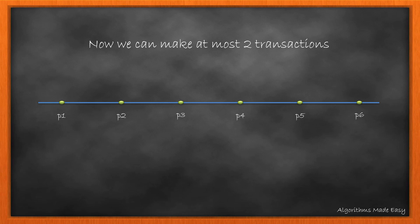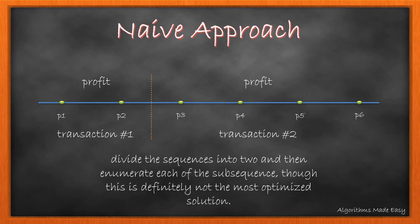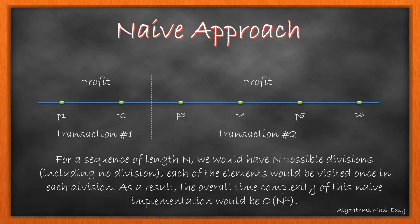Now let's talk about the scenario where we can make at most 2 transactions. The 2 transactions will look like this: one division will give the profit for the first transaction while the rest will give the profit for the second transaction. So the naive approach will be to divide the array into 2 and then find the profit for both parts. But for a sequence of length n, we would have n possible divisions. Each element would be visited once in each division. As a result, the overall time complexity of this naive implementation would be O(n²).